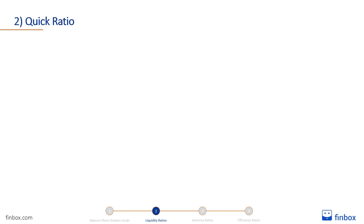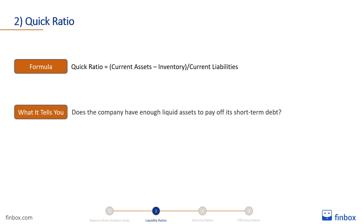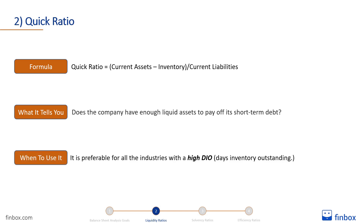Let's move on to the quick ratio. The quick ratio is equal to current assets minus inventories divided by current liabilities. It tells you if a company has enough liquid assets to pay off its short-term debt. The quick ratio is more conservative than the current ratio. It is preferable for all industries with a high DIO, or Days Inventory Outstanding — a metric that indicates how rapidly a firm sells the inventory it has in stock. For those industries, it's better to exclude inventories from the calculation because they are not necessarily easily convertible into cash.